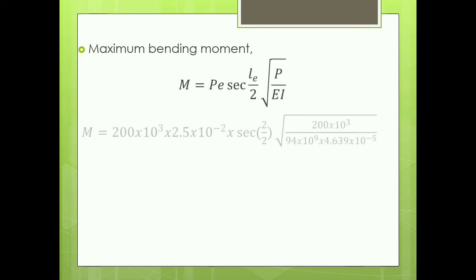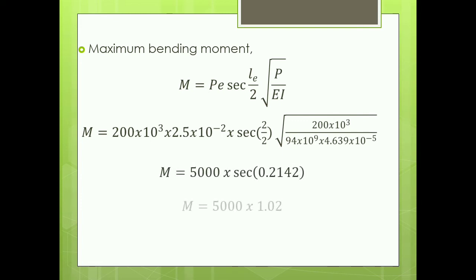Next we are going to calculate the maximum bending moment as we have derived our formula earlier: M = P × e × sec(l/2√(P/EI)). Make sure while calculating secant of 0.2142, it should be done in radian mode in the calculator.